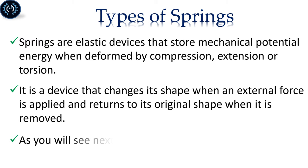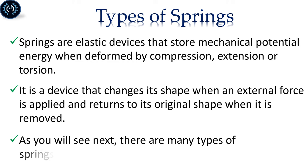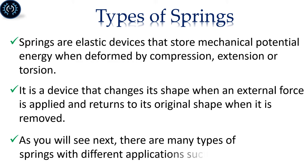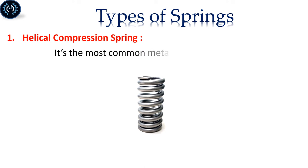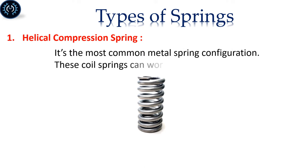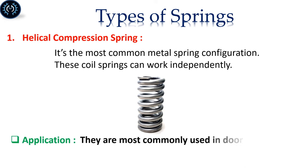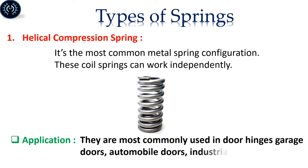As you will see next, there are many types of springs with different applications. Helical Compression Spring: It's the most common metal spring configuration. These coil springs can work independently and are most commonly used in door hinges, garage doors, automobile doors, and industrial heavy duty applications.